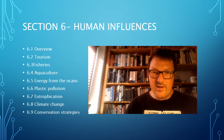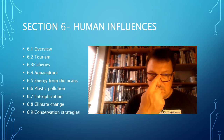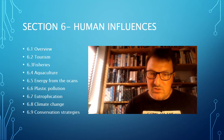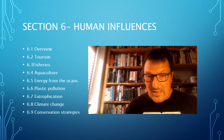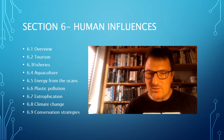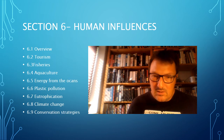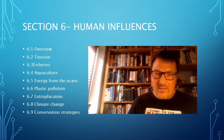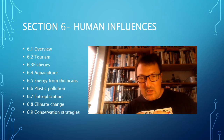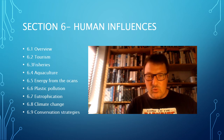The final part of the syllabus, Chapter 6, looks at human influences on the marine ecosystem. We do have a lot of influence on the ocean, and the ocean has influence on us, so this is a really important chapter — the one that takes us from chemistry and biology into more social sciences and economics.